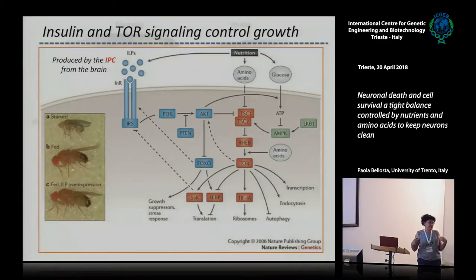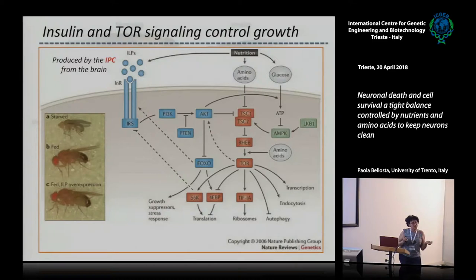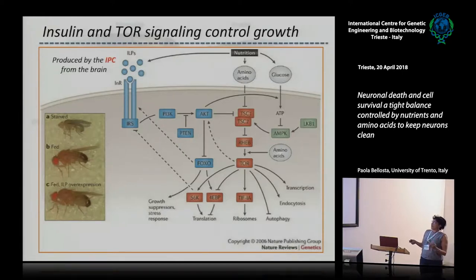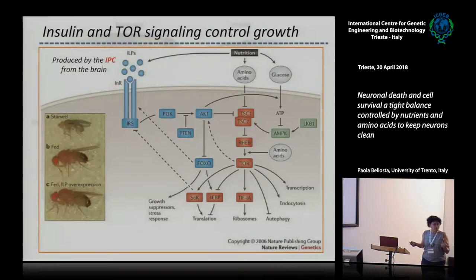The animal reduces in size, and this is linked to early release of ecdysone, so the animal becomes a pupa and undergoes metamorphosis smaller. Conversely, if you overexpress DILPs — the insulin peptides — throughout the whole animal, the animal is bigger compared to control. Every mutant in these pathways — loss of function of insulin signaling or TOR pathway, or gain of function — ends up with either small flies or big flies respectively.